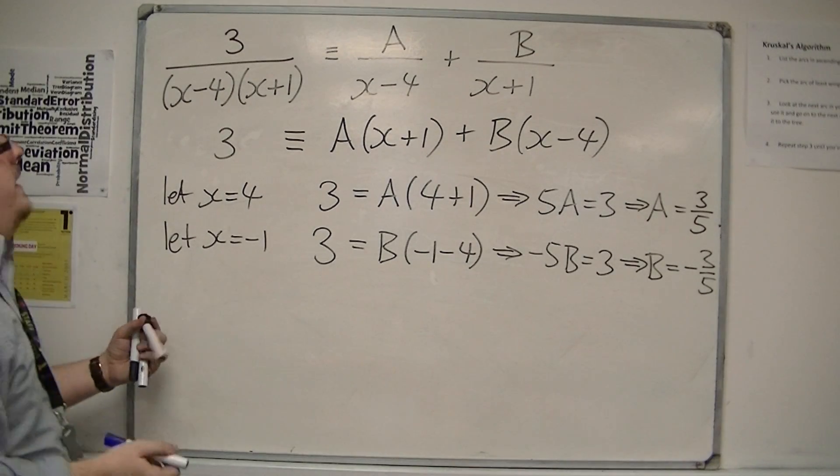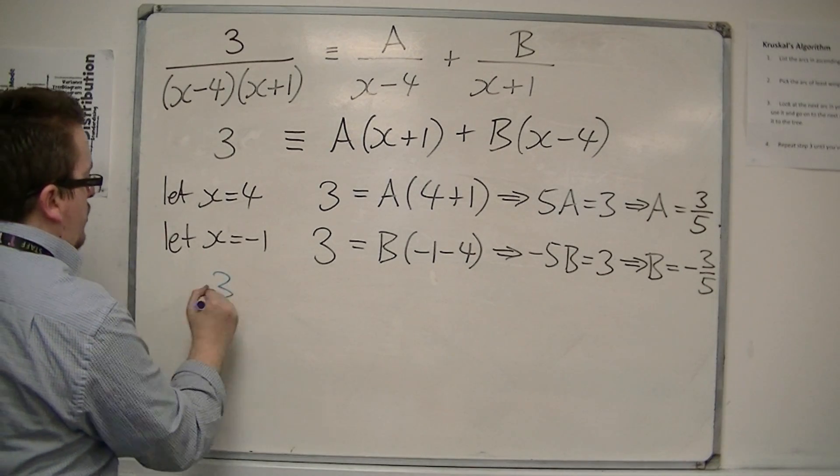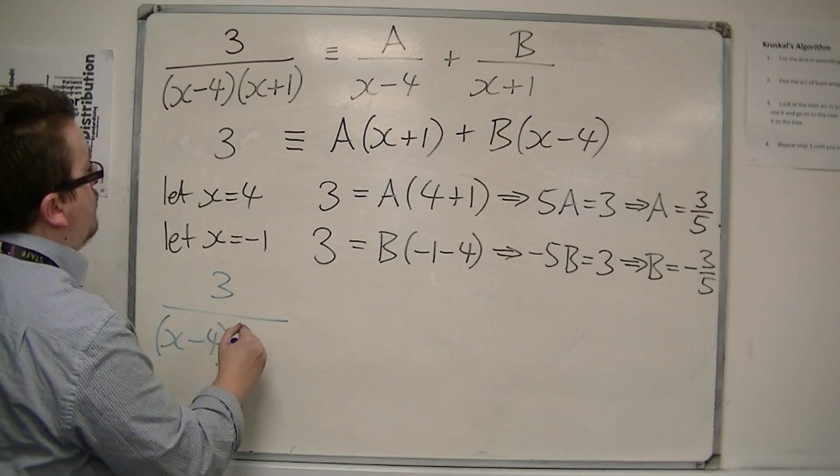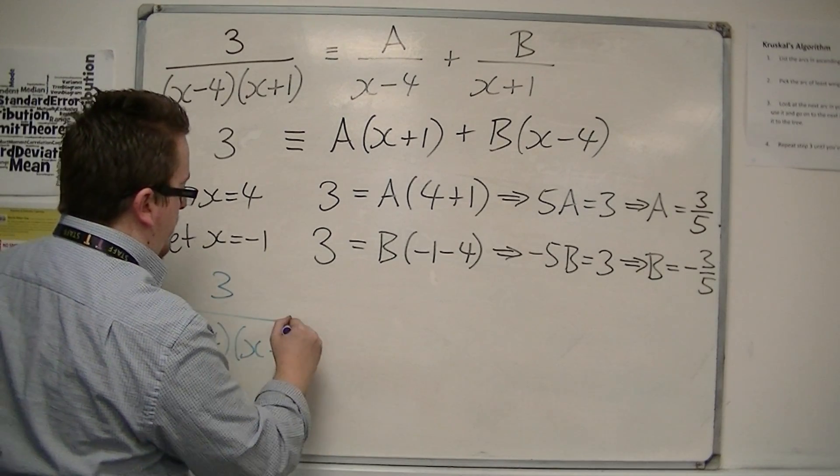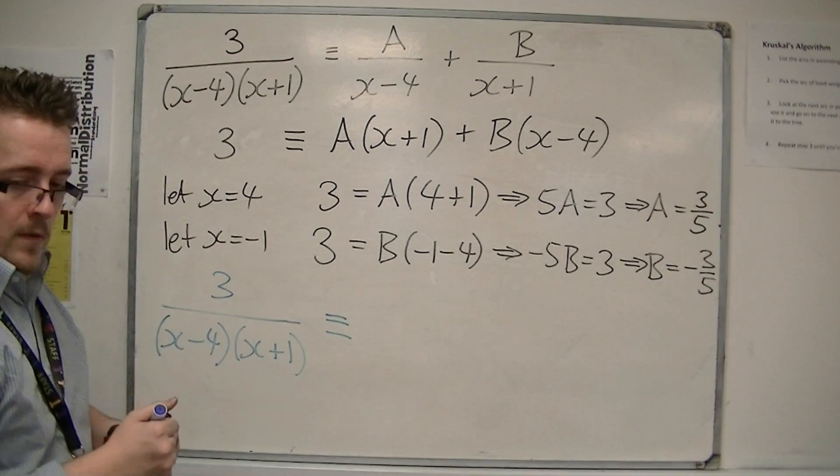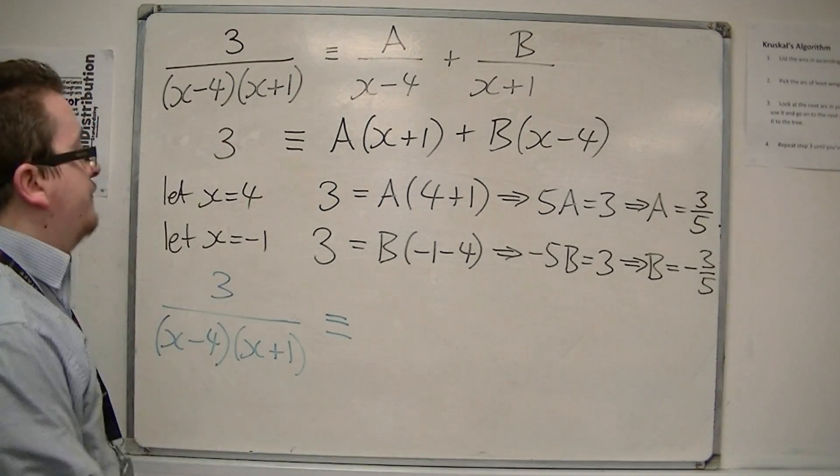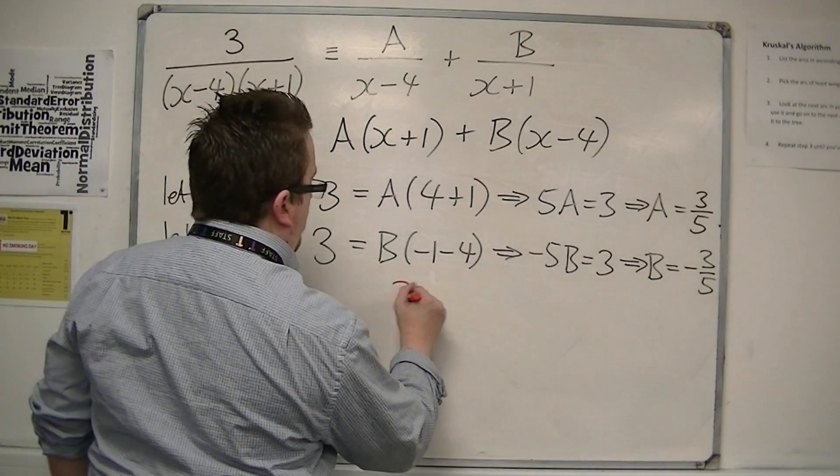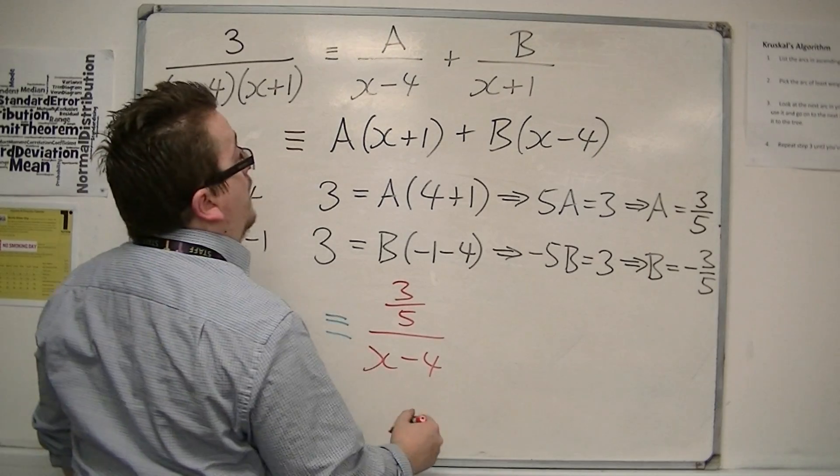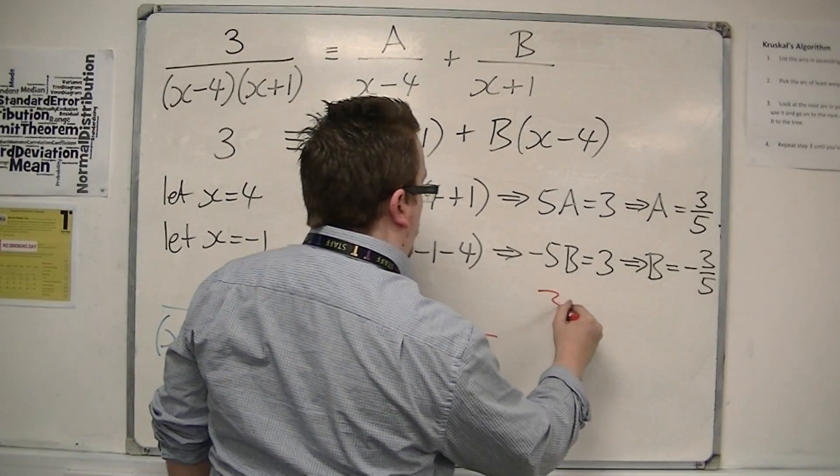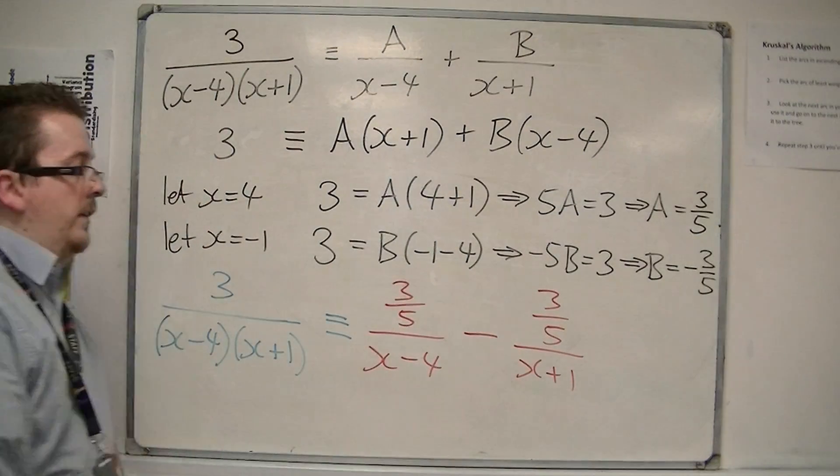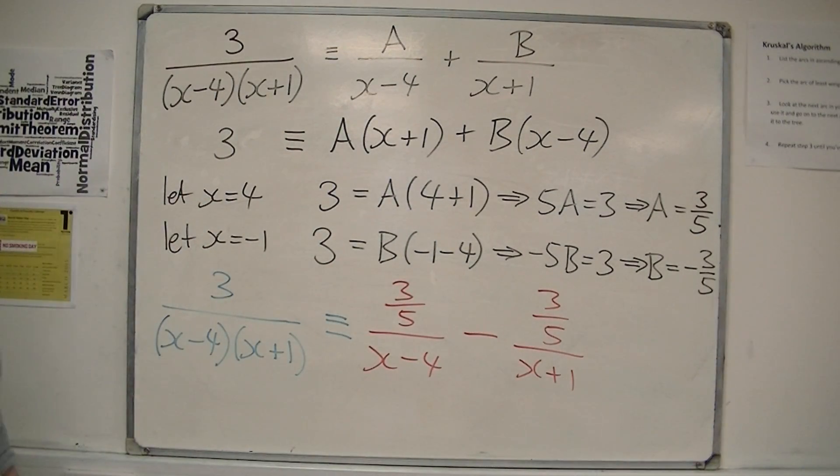So, I can now say that the original rational function, 3 over x minus 4, x plus 1, is the same as 3 fifths over x minus 4, minus 3 fifths over x plus 1, or plus minus 3 fifths, whichever way around you want to write it.